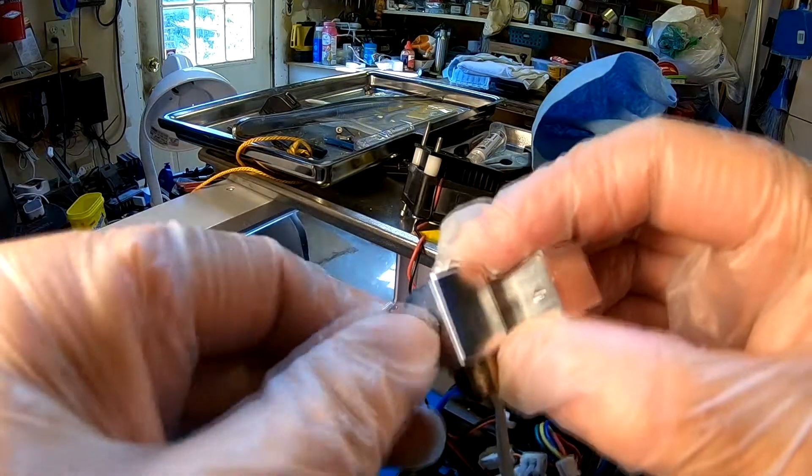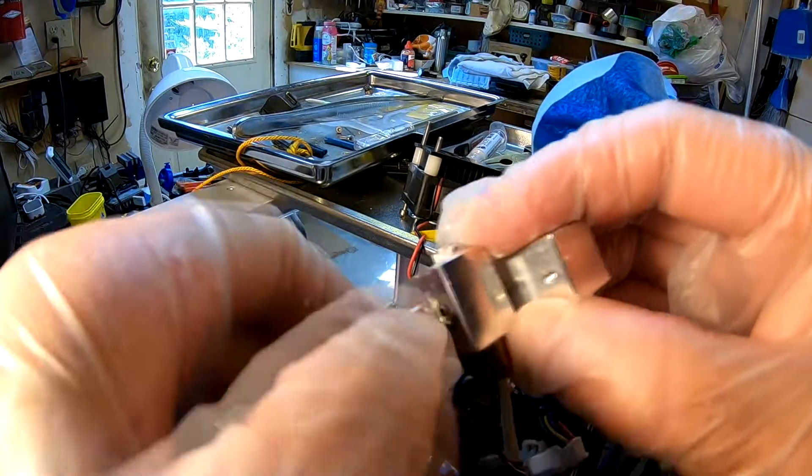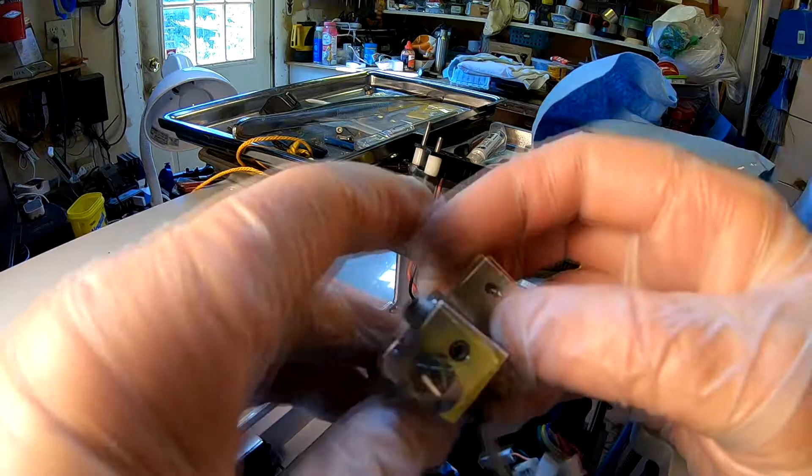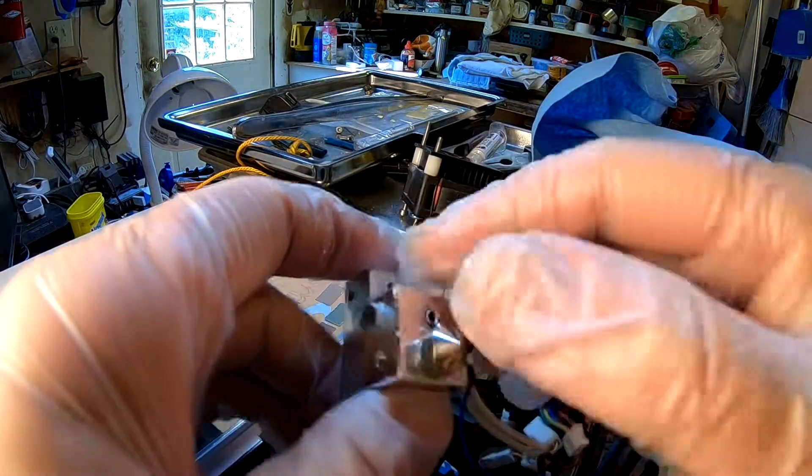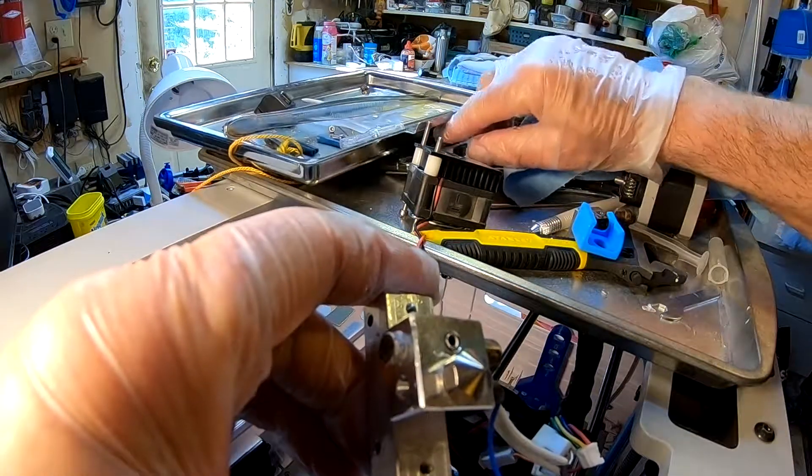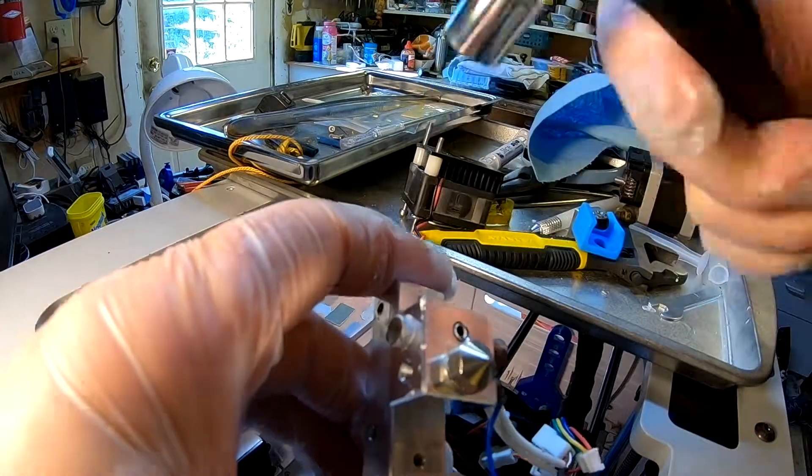And we're going to seat this by hand. That way you can get the threads started easily. Doing it by hand, let's do it finger tight. Then we need to heat this up now, and we're going to finish it up with our 9 millimeter socket when it's hot. Then it'll really stay in there.